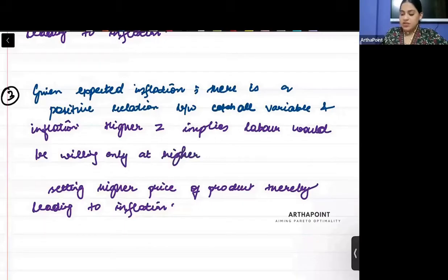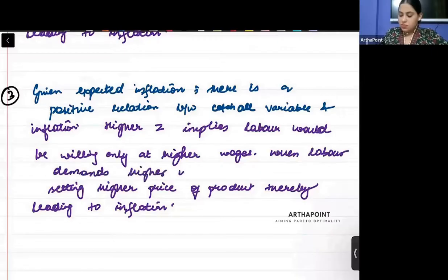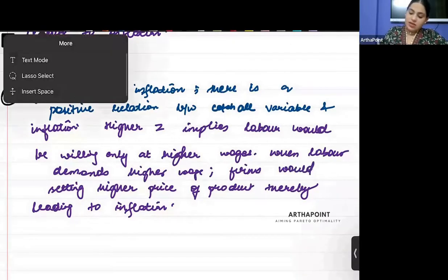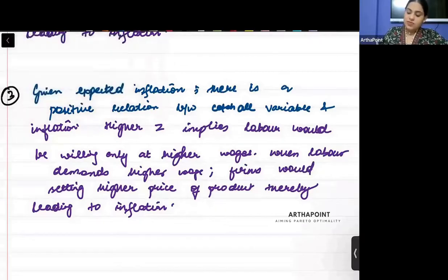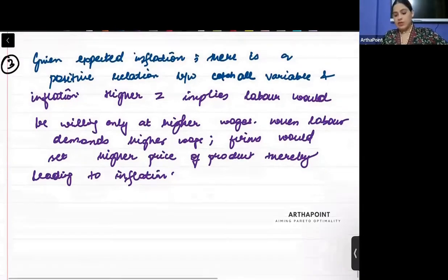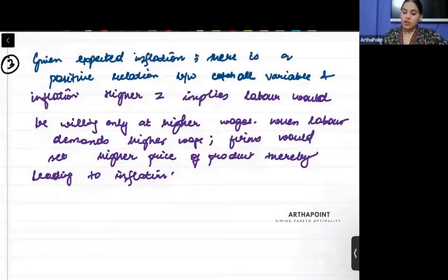We have done this in the previous classes, no? So when labor demands higher wage, firms would set higher price. So firms would go ahead and they would set higher price of the product, thereby leading to inflation. Point number four.